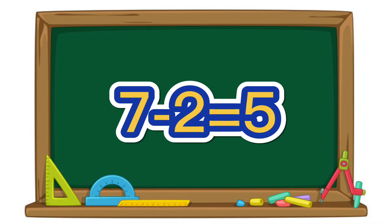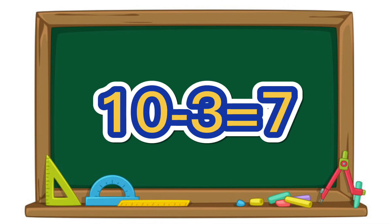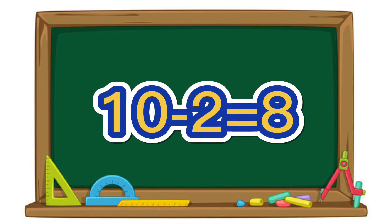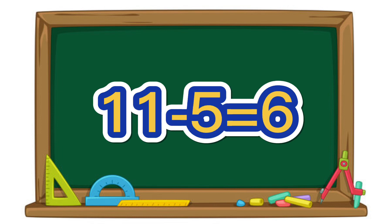7 minus 2 equals 5. 10 minus 3 equals 7. 5 minus 4 equals 1. 10 minus 2 equals 8. 11 minus 5 equals 6.